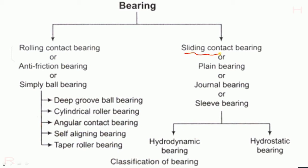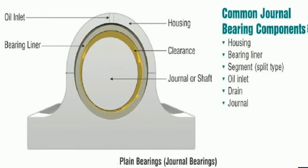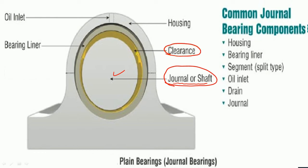We have one more classification: the sliding contact bearing, also called plane bearing, journal bearing, or sleeve bearing — these are all the same. In this sleeve or journal bearing, the center shaft is called the journal. Oil is filled at the clearance between the journal and the bearing, and there is an oil inlet and bearing liners. This constitutes a journal bearing, also called a plane bearing.